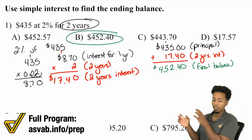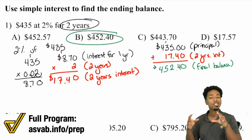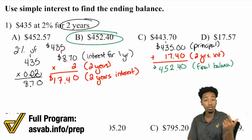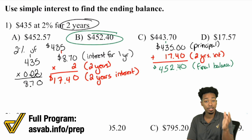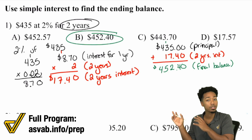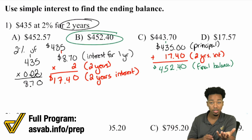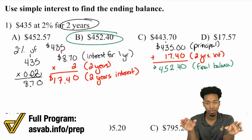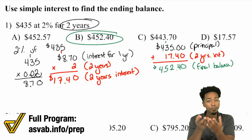This looks like it was probably complicated with all these steps, but literally all we did was find the interest for one year, then multiply it by the number of years the money was actually in the account and just add it back, and you're done. Simple interest is simple — the interest that you earn in year one is the same that you'll earn in year two, year three, year four, year five. It's the same all the way through. So just multiply the interest for one year by the number of years and add it back.